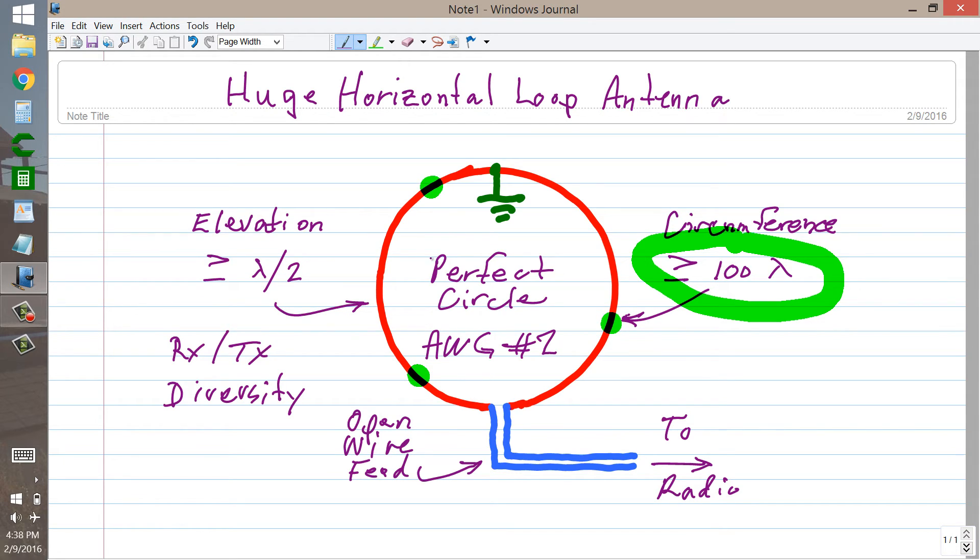You're going to get what is called spatial diversity. That means diversity because of the enormous size in space, geometric space, of this antenna. You're not going to be using frequency diversity or phase diversity or anything like that, but rather spatial diversity.